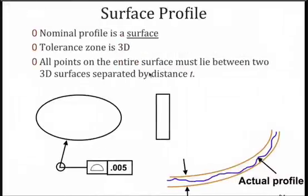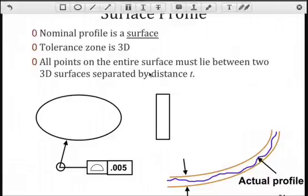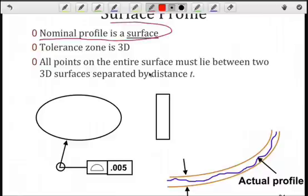Well, we can extend the same principle to three dimensions, and that we call a surface profile. With the surface profile, we're looking at the entire surface, not just a cross-section. So, similar to when we went from circularity to cylindricity, we're going from a 2D profile to a three-dimensional profile.